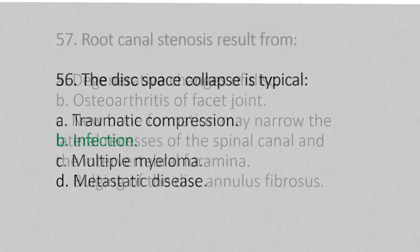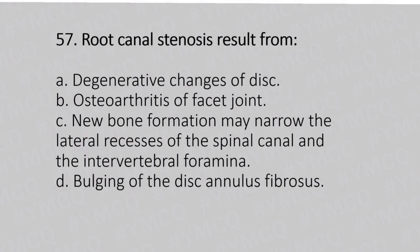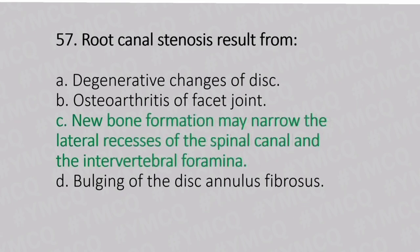Now let's move to question number 57. Root canal stenosis results from. Option A: degenerative changes of the disc. Option B: osteoarthritis of the facet joint. Option C: new bone formation may narrow the lateral recess of the spinal canal and the intervertebral foramen. Option D: bulging of the disc annulus fibrosis. And the answer is Option C, new bone formation may narrow the lateral recess of the spinal canal and the intervertebral foramen.